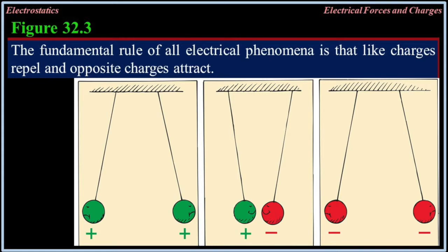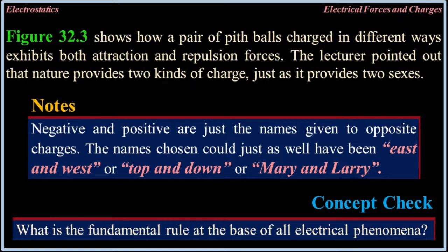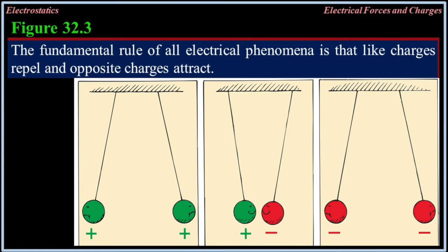A pair of pith balls charged in different ways exhibits both attraction and repulsion. Nature provides two kinds of charge just as it provides two sexes. Negative and positive are just the names given to opposite charges — the names chosen could just as well have been East and West or Top and Down. The fundamental rule of all electrical phenomena is that like charges repel and opposite charges attract.